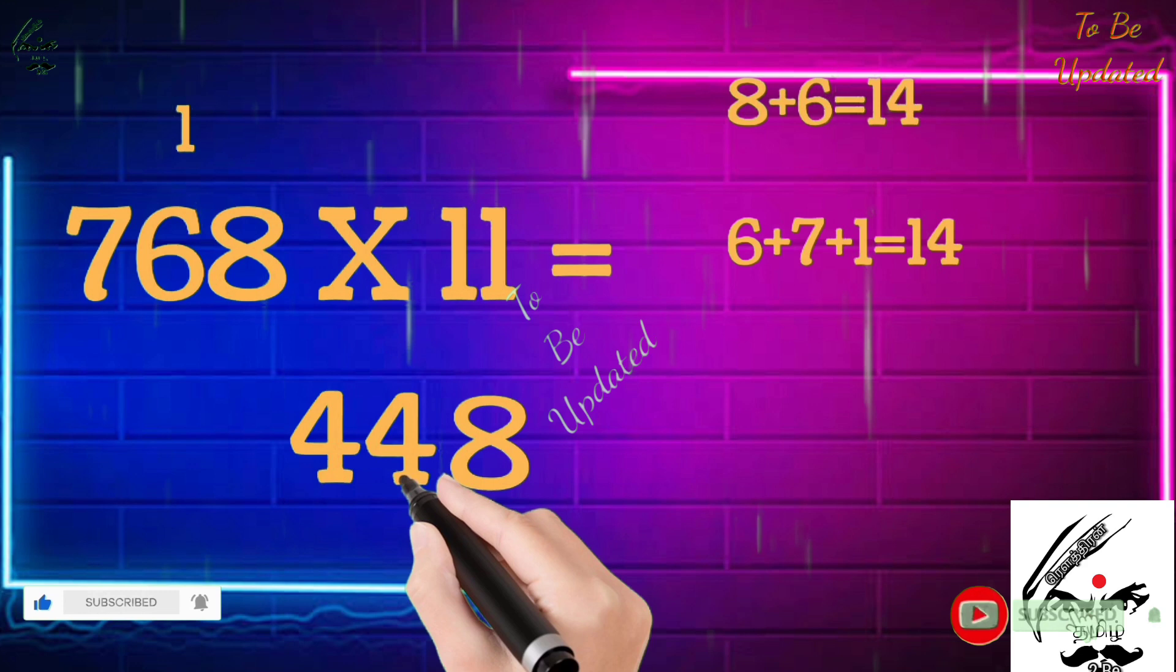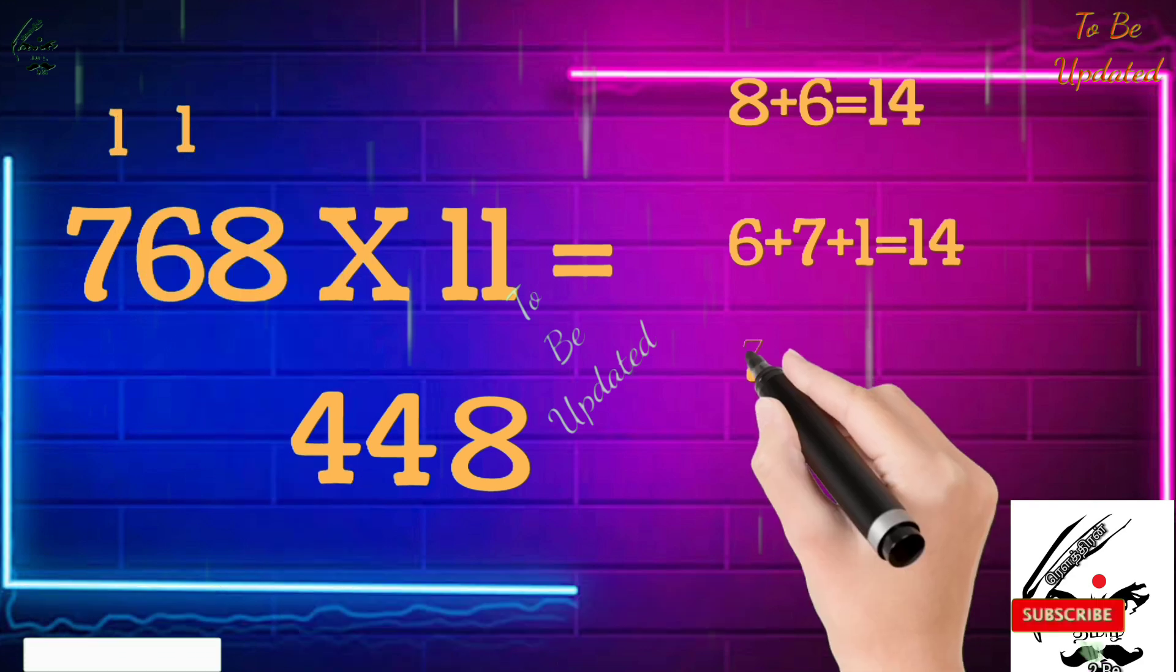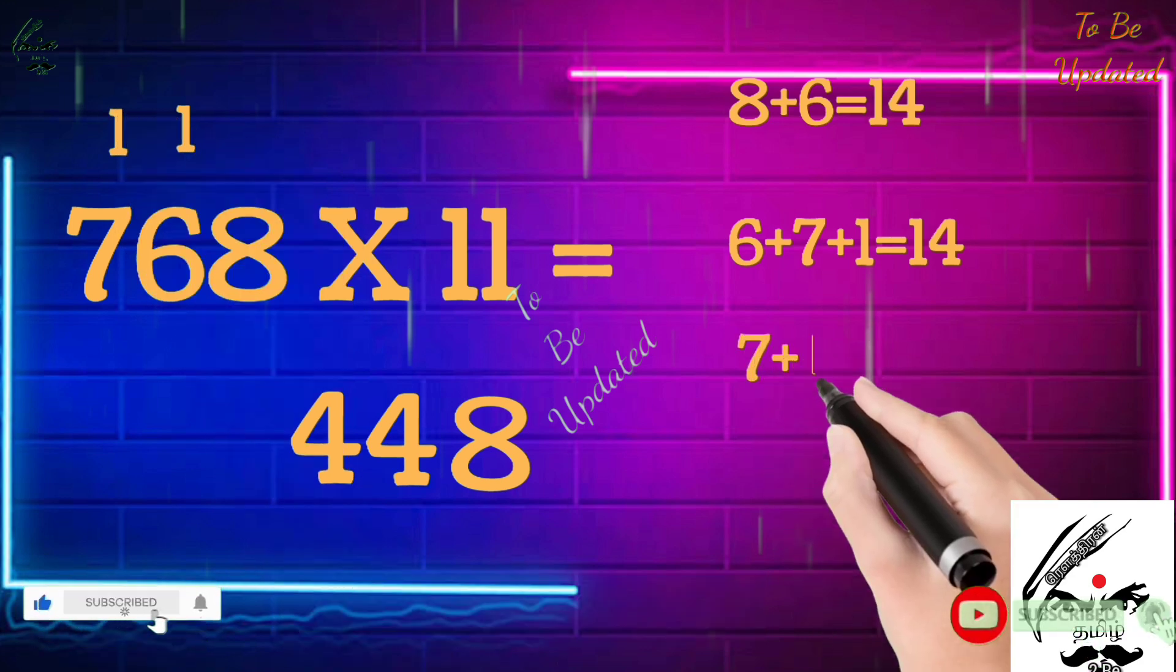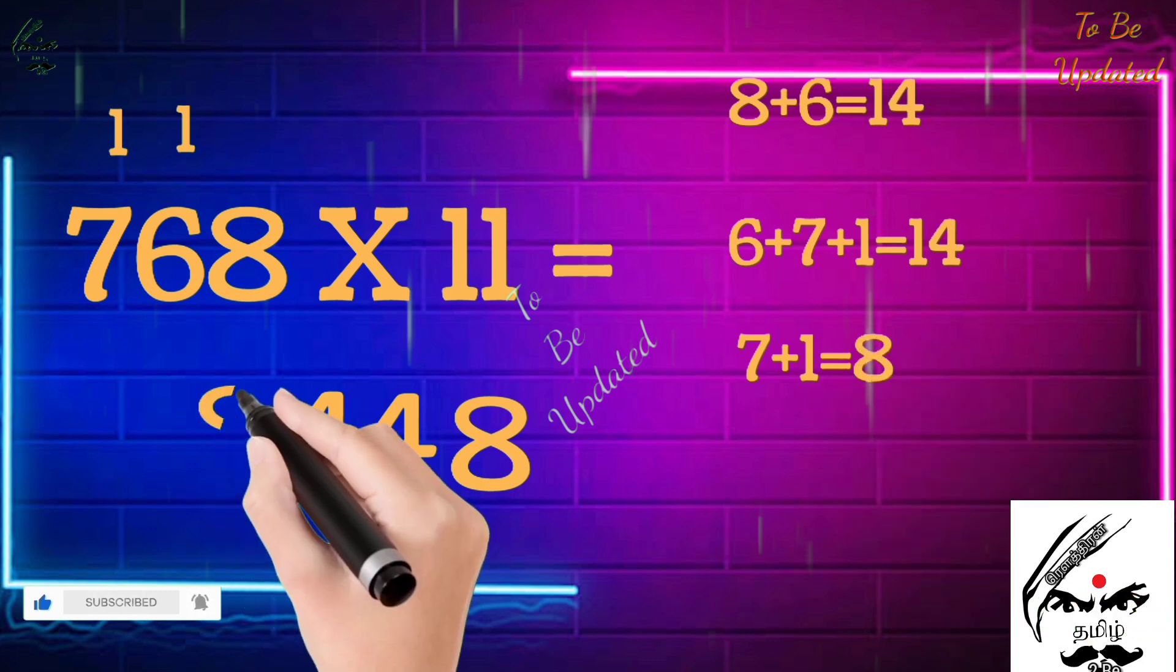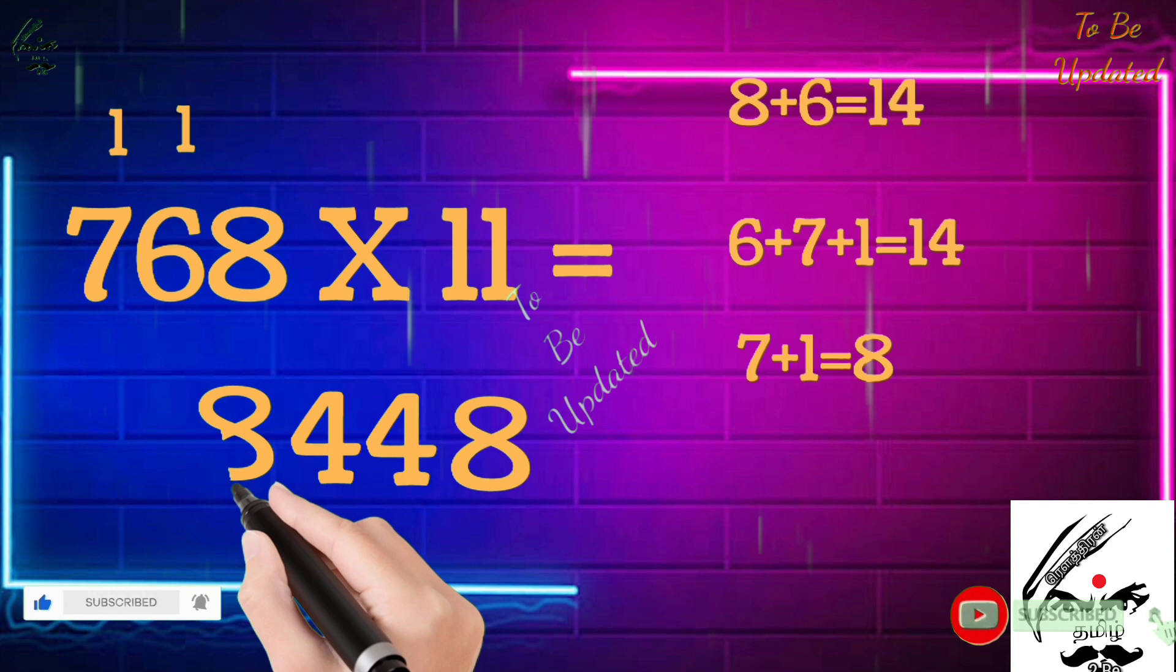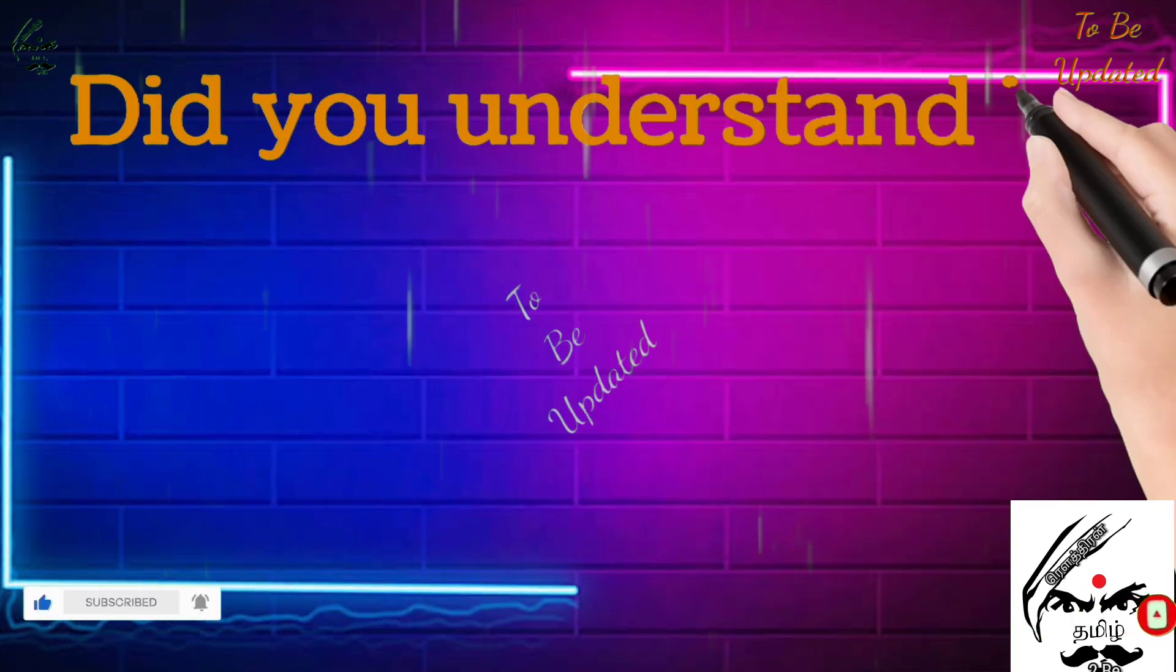We have 6. Previous letter is 7. 6 plus 7 is 13, plus 1, that remainder, so we get 14. We write 4, we take the 1 as a remainder. First number is 7. 7 plus 1, we are adding the remainder. 7 plus 1 is 8, so we display the 8 there. So 768 times 11 is 8448. Do you understand? If you don't understand, no problem, let us see another example.